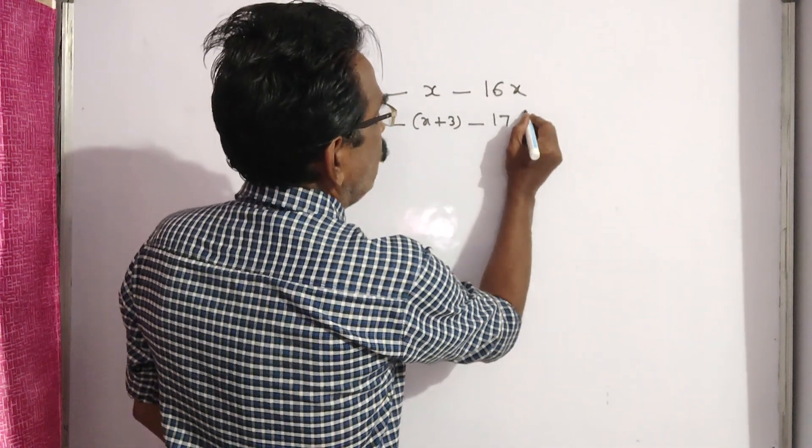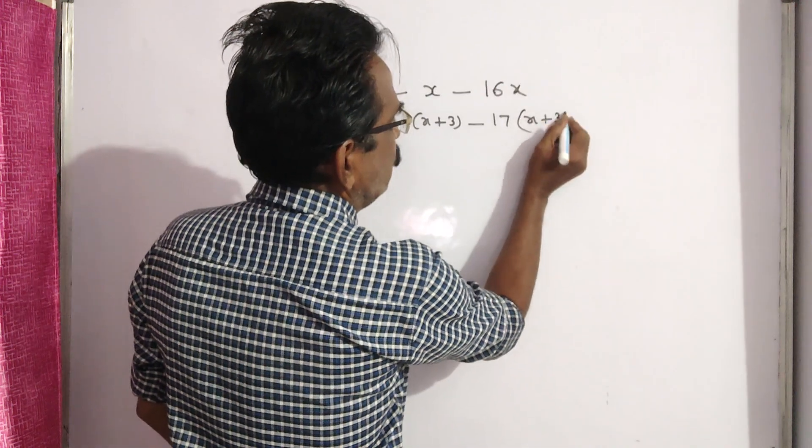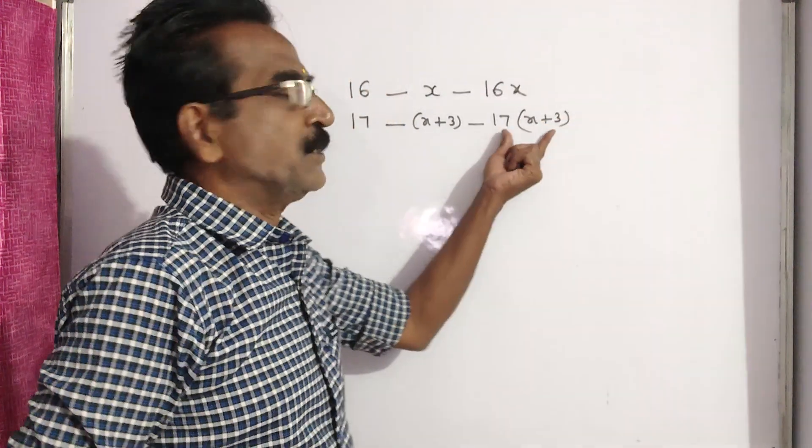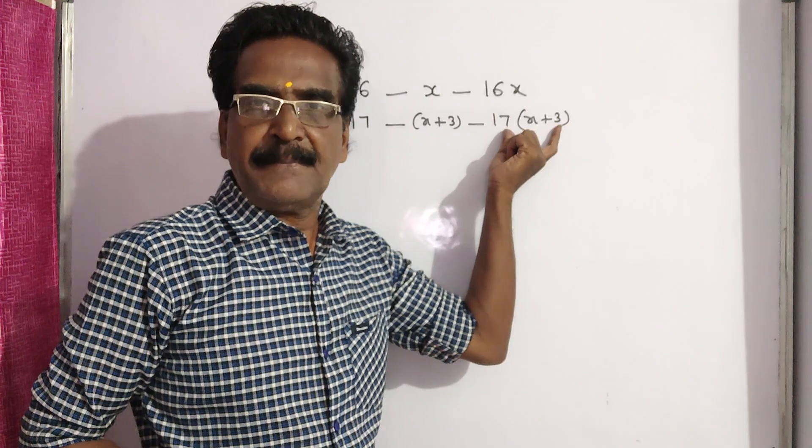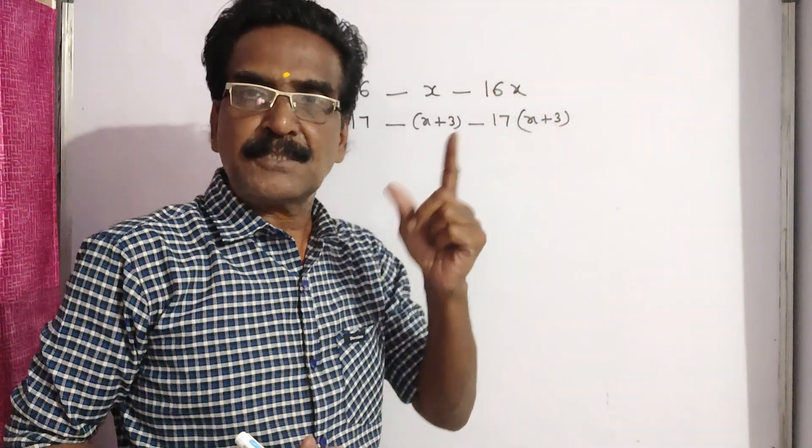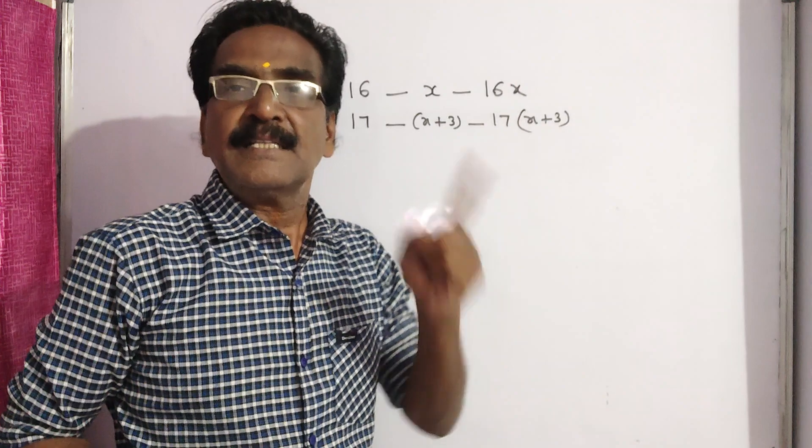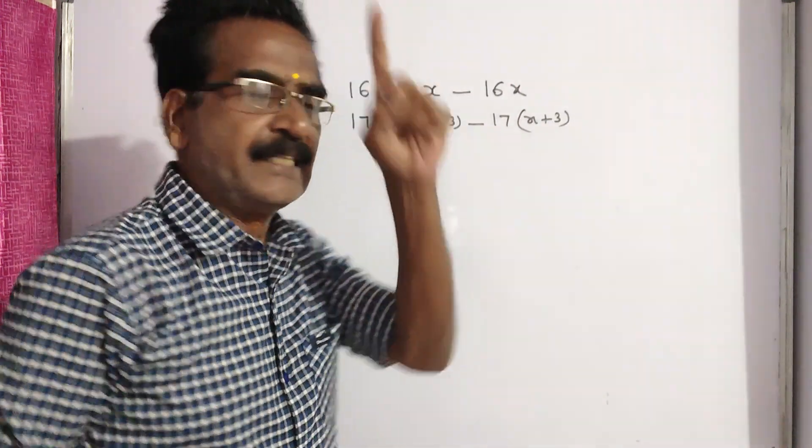So your total runs up to 17 matches is 17 into X plus 3. This is the total runs up to 17 matches. This is the total runs up to 16 matches. So this minus this gives the runs scored in the 17th match, that is 85.